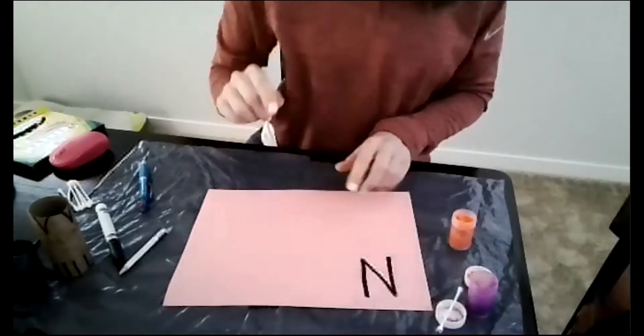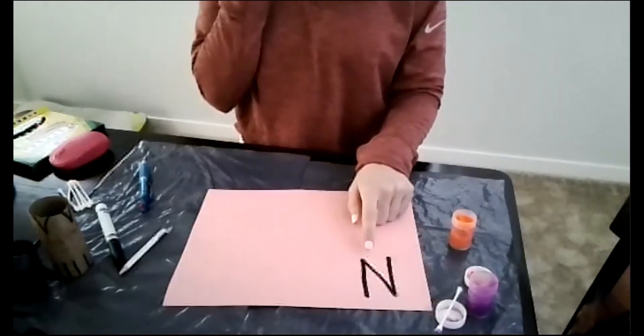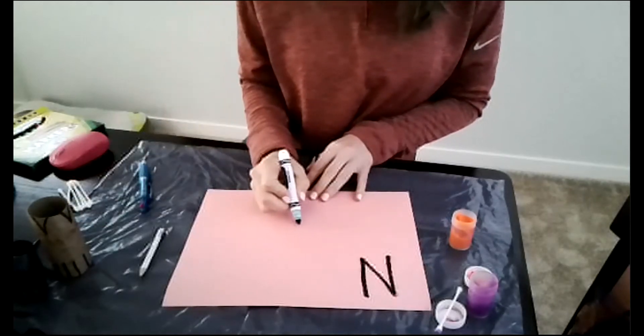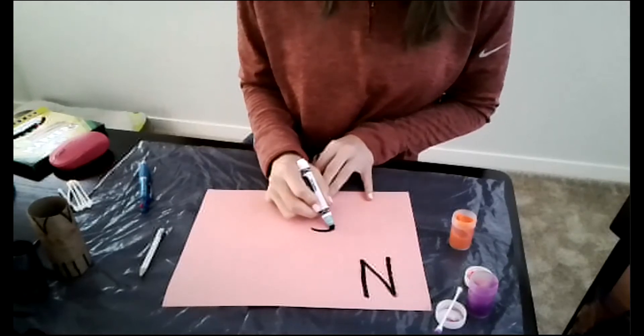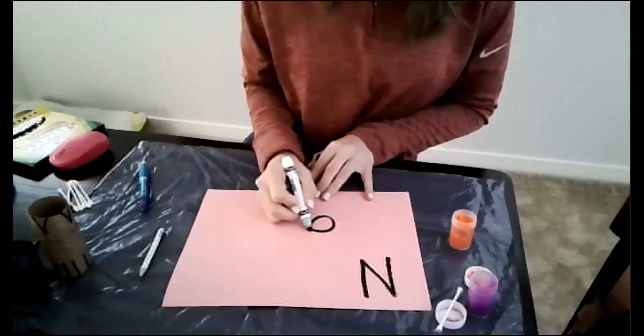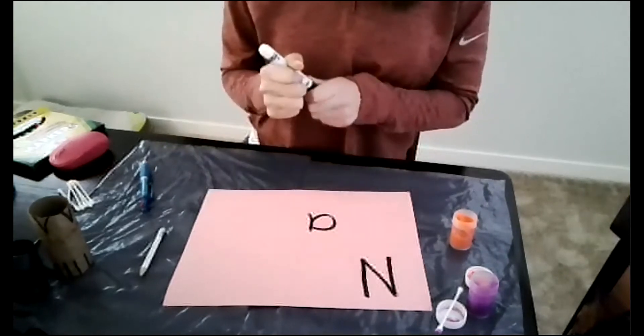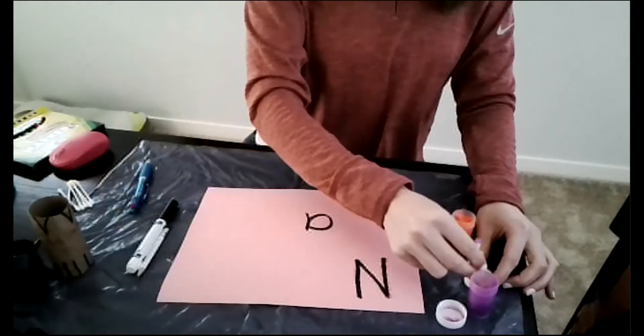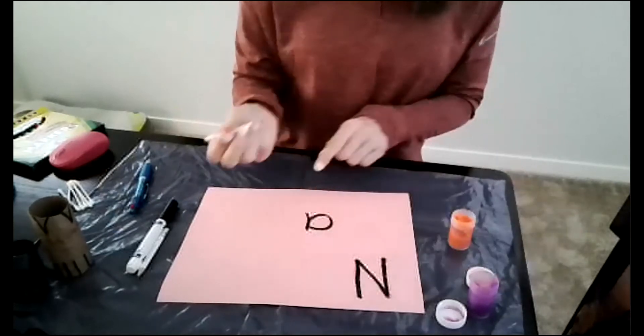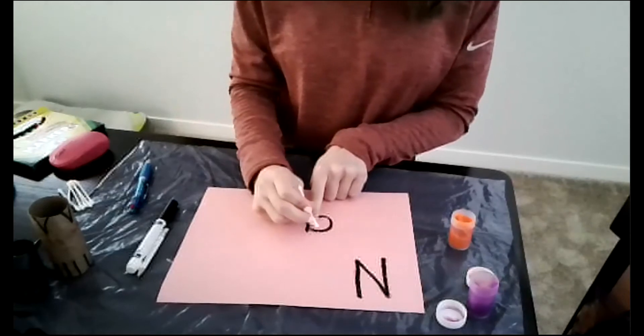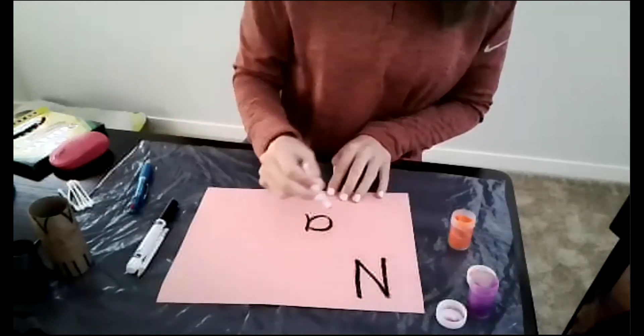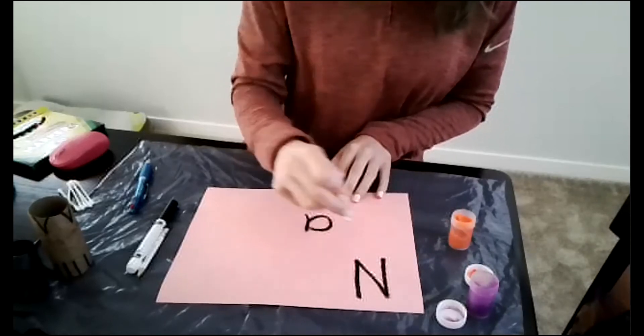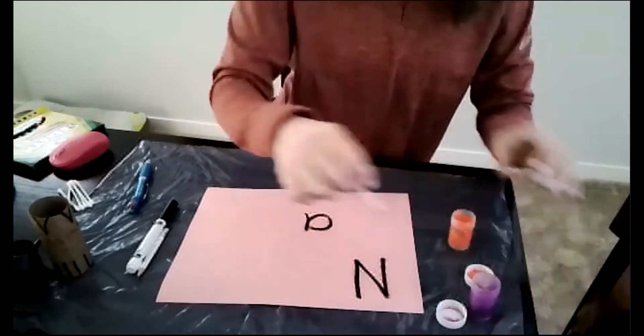So encourage your child to make the letter the same way that you made it so that you're reinforcing correct letter formations. So we'll do a magic C letter. Magic C, helicopter up, bump, and down is an A. And then again when your child is making that letter, reinforce the correct place for them to start with the magic C. All the way around. Helicopter up, bump, and then back down.